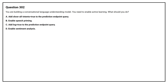Option A: Add 'show all intents equals true' to the prediction endpoint query. Option B: Enable speech priming. Option C: Add 'log equals true' to the prediction endpoint query. Option D: Enable sentiment analysis.